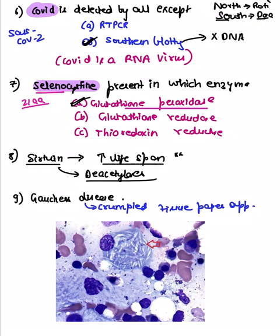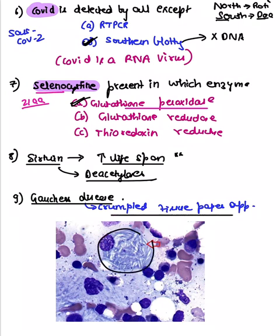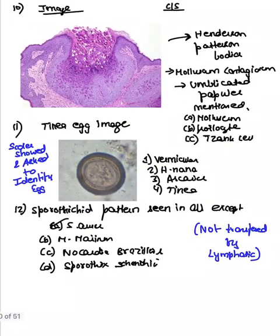Gaucher's disease was asked. It shows a crumpled tissue paper appearance — it looks like a tissue paper has been crumpled and placed in front of you.